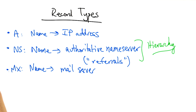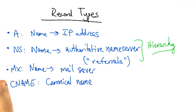Another important DNS record type is an MX record, which shows the mail server for a particular domain. Occasionally, one name is just an alias for another name. For example, www.gatech.edu actually has a slightly different real name. The CNAME is basically a pointer from an alias to another domain name that needs to be looked up.